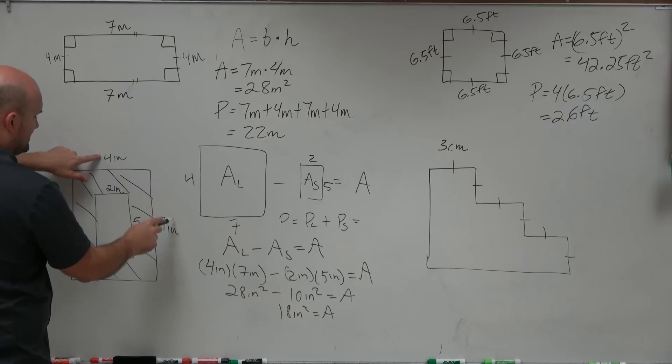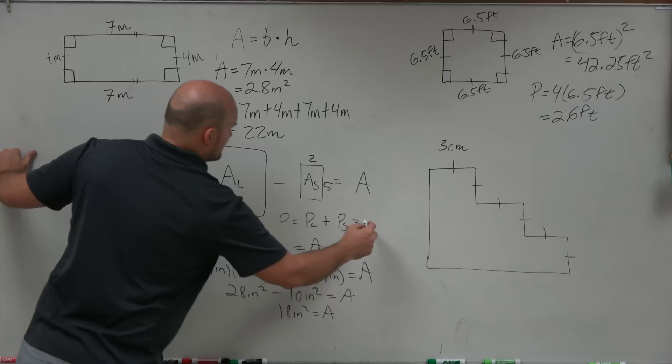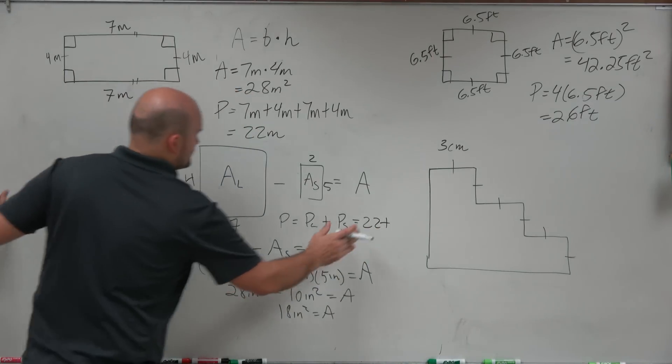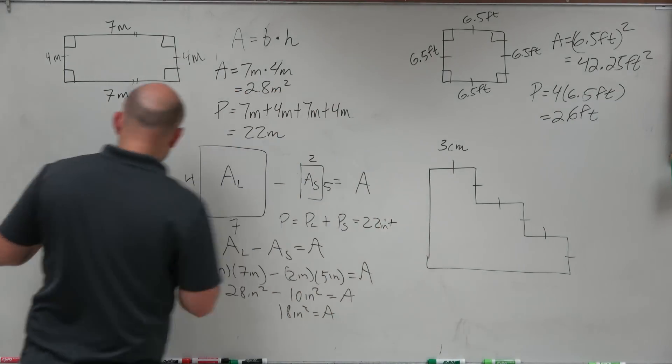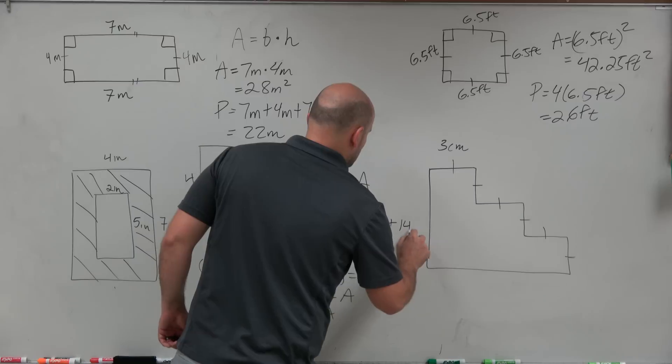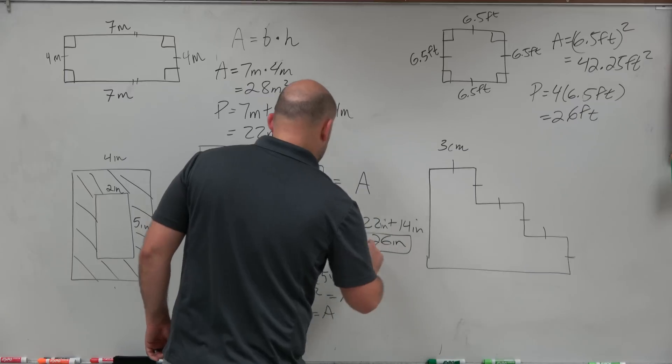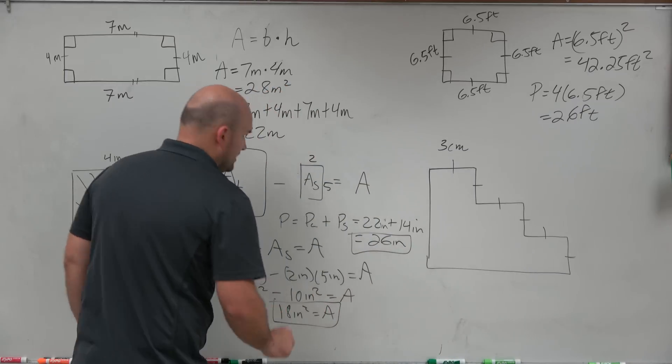That's 22. 4 plus 7 plus 4 plus 7 is 22 inches. Plus 2 plus 5 is 7, plus 2 is 9, plus 5 is 14. Plus 14 inches equals 36 inches. So therefore we have the perimeter as well as the area.